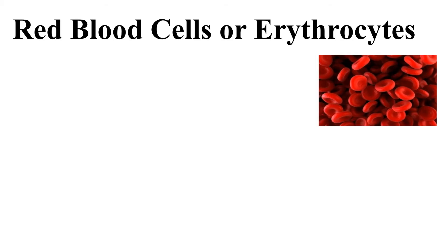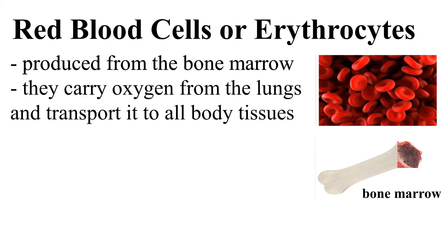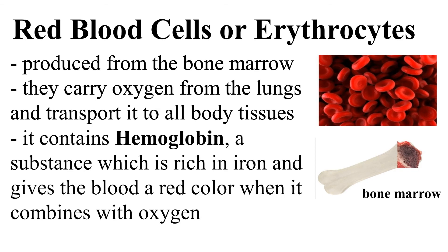The red blood cells, also known as erythrocytes, are produced from the bone marrow. They carry oxygen from the lungs and transport it to all parts of the body. Red blood cells contain hemoglobin, a substance rich in iron that gives the blood its red color when it combines with oxygen.